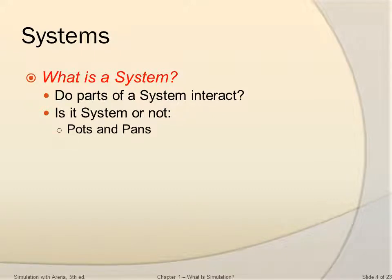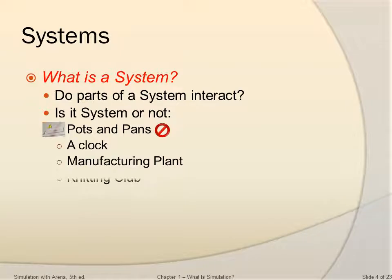Pots and pans - there's not much interaction, so no, it's not a system. A clock - parts of a clock work together, so it's a system. A manufacturing plant, also a system. A zoo doesn't really interact much in terms of working together for the same goal, so no, it's not a system.